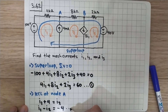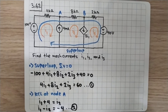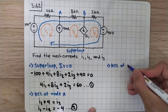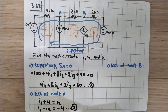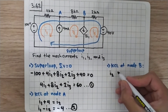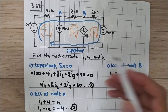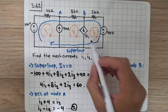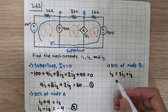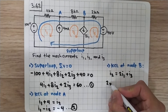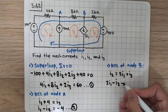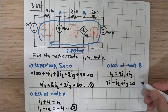Now we do KCL at node B. The current going in is only i2. The currents going out are the dependent current source 2i1 and also i3. So i2 = 2i1 + i3, which rearranges to 2i1 - i2 + i3 = 0. This is equation number three.